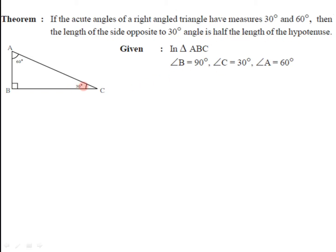The side opposite to 30 degree is AB and the hypotenuse is AC, as it is the side opposite to the right angle. That's why here we have to prove that side opposite to 30 degree, that means AB, must be half of AC. That is, we have to prove AB is equal to half of AC.